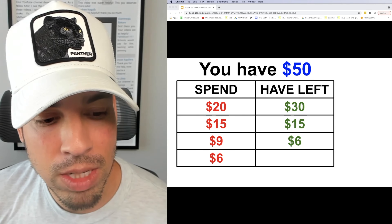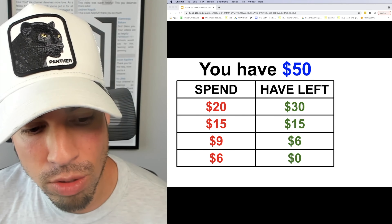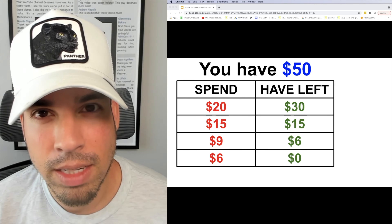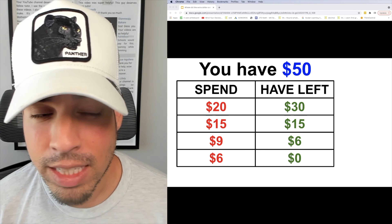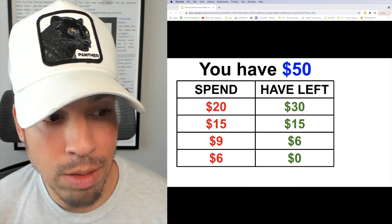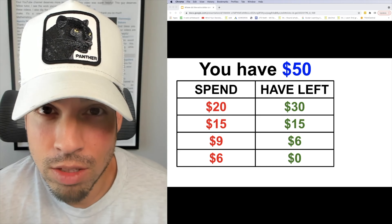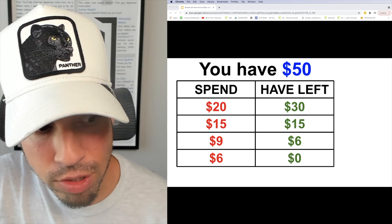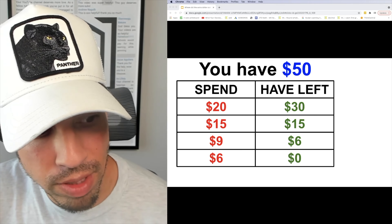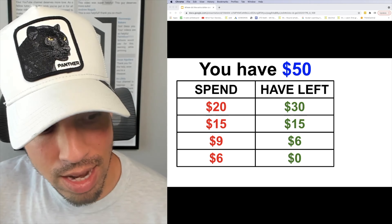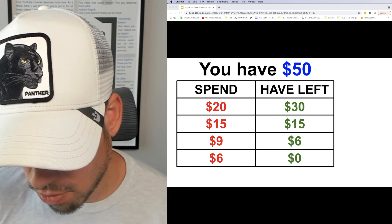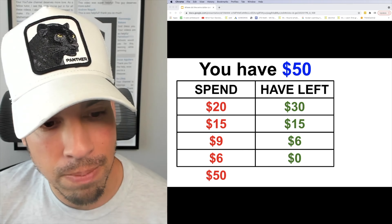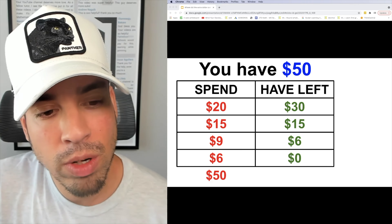Finally you're gonna spend that remaining $6 and that means you have zero dollars left. Now if I take everything in the left-hand column — everything I spent — it should add up to $50, because how can you spend more money than you have? So $20 plus $15 is $35, plus $9 is $44, and plus $6 is $50.